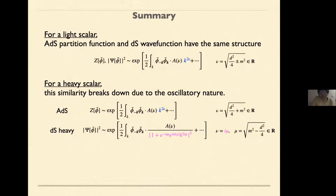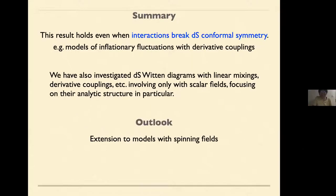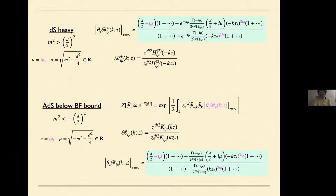So it's clearly not scaling invariant, and this is due to the oscillatory feature of this power factor of the momentum. On the ADS side, you should be looking at scalars with mass below the BF bound. Actually, I added this slide after uploading the movie, that's why I wanted to share the slide. This is a more appropriate comparison.